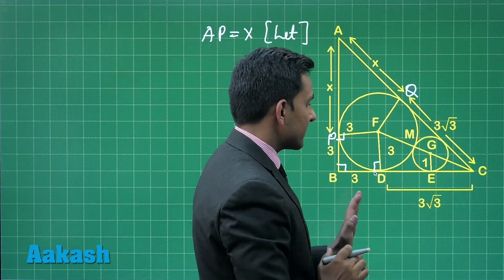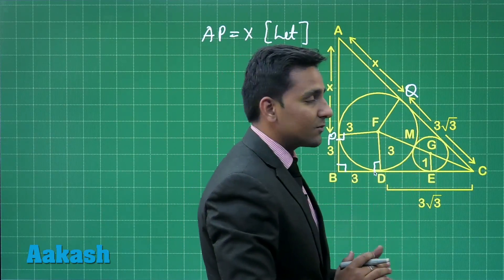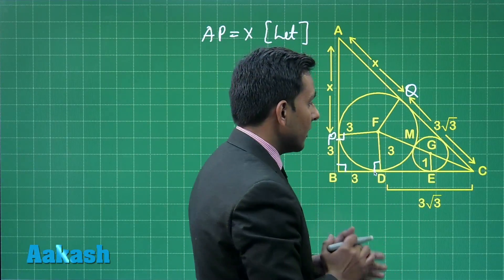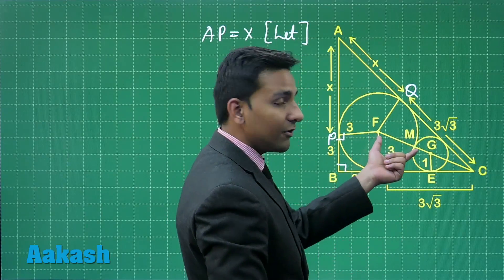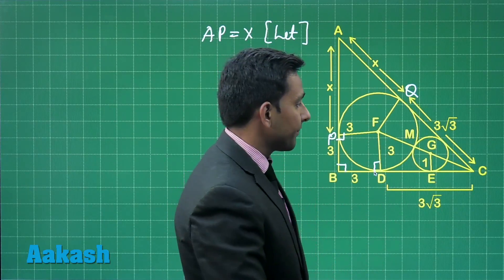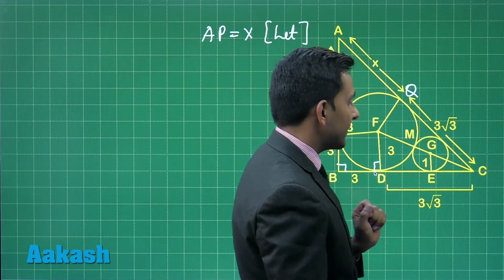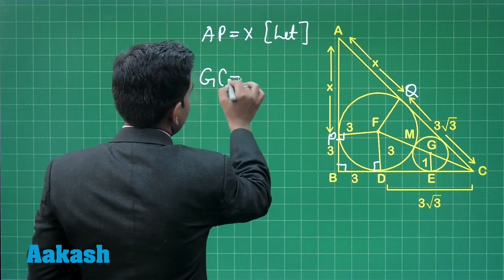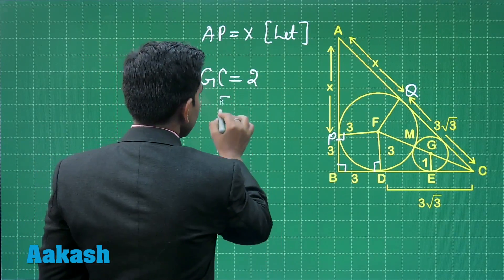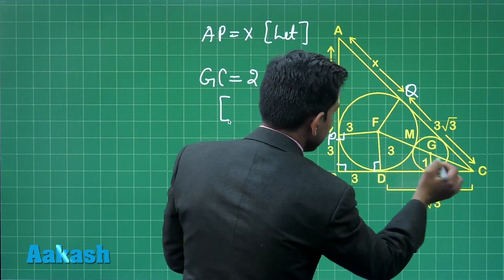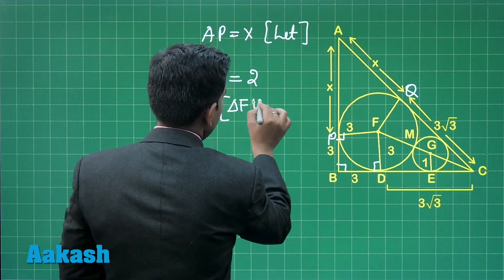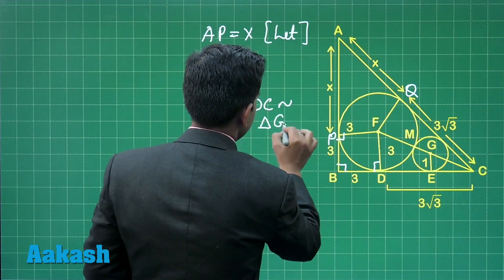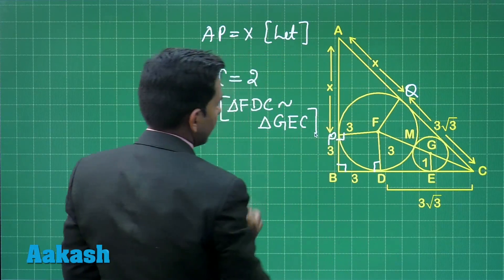Moving to the circle with radius 1 centimeter, the distance between the centers of the two circles is 4 centimeters — FM is 3 centimeters and MG is 1 centimeter. The length of line segment GC is equal to 2 units, using the concept of similarity, because triangle FDC is similar to triangle GEC.